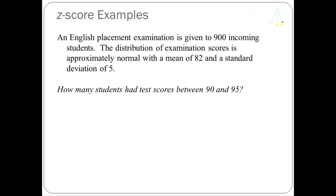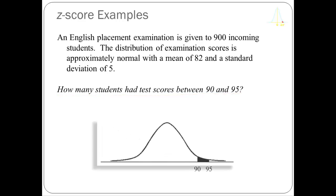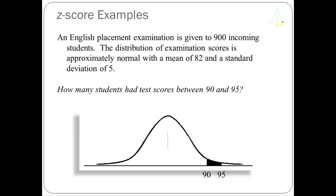Here's our third problem. Just like the last ones, but now I'm interested in how many students had test scores between 90 and 95. When I draw this out, you can see that the vertical red line representing the mean of 82 falls outside the interval I'm interested in. Obviously, 82 doesn't lie between 90 and 95. This is going to be a different kind of problem — we're going to have to do some subtraction.